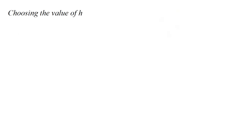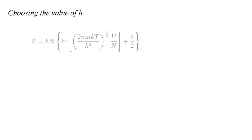We have one final issue to resolve: how do we choose the value of the parameter h? The other parameters — k, n, m and T — have physical significance. But h, the area of a phase space rectangle, seems to have been merely introduced to allow us to apply our balls and boxes formula to the gas phase space.